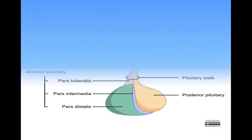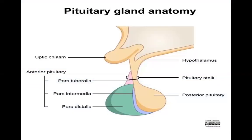As we see in this diagram, this is the optic chiasm, and this is the anterior lobe of the pituitary gland, subdivided into pars tuberalis, pars intermedia, and pars distalis. This is the posterior pituitary, this is the stalk, and the hypothalamus.